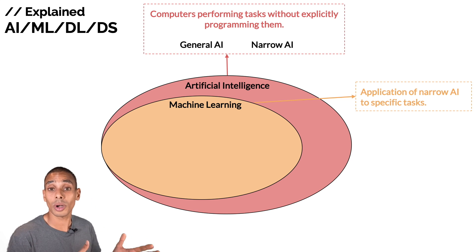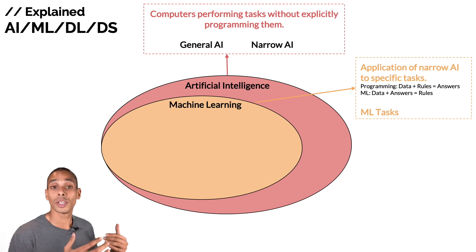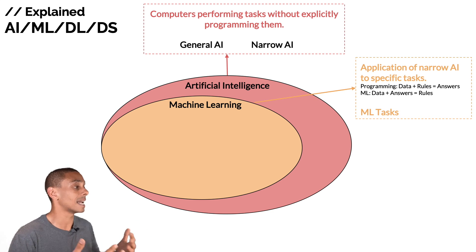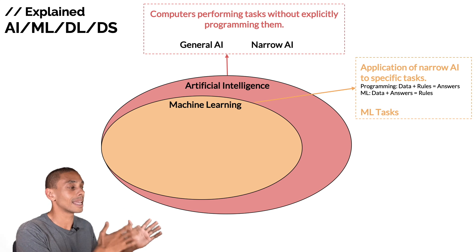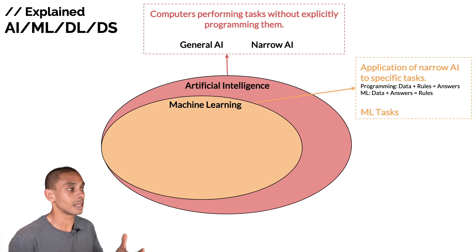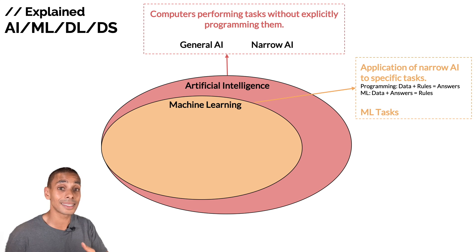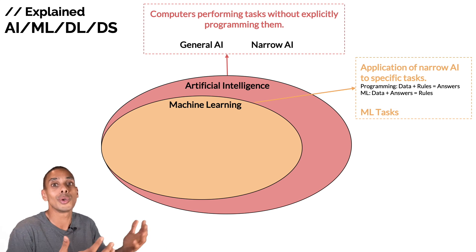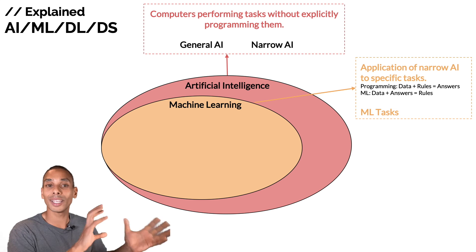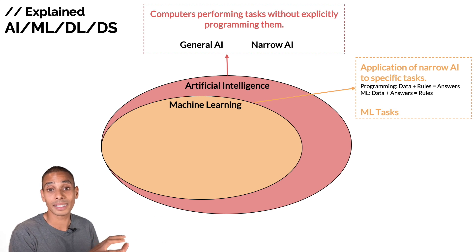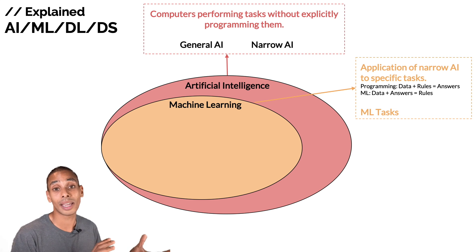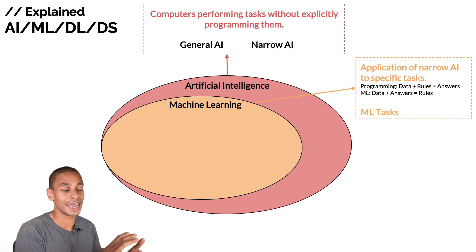When we talk about machine learning, we often compare it to traditional programming. In traditional programming, we supply data plus rules or conditional logic and we get answers. In machine learning, on the other hand, we provide data plus historical answers to get rules, and we can then pass new data to get new answers. This represents a shift in the paradigm of how machine learning engineers are building programs today.